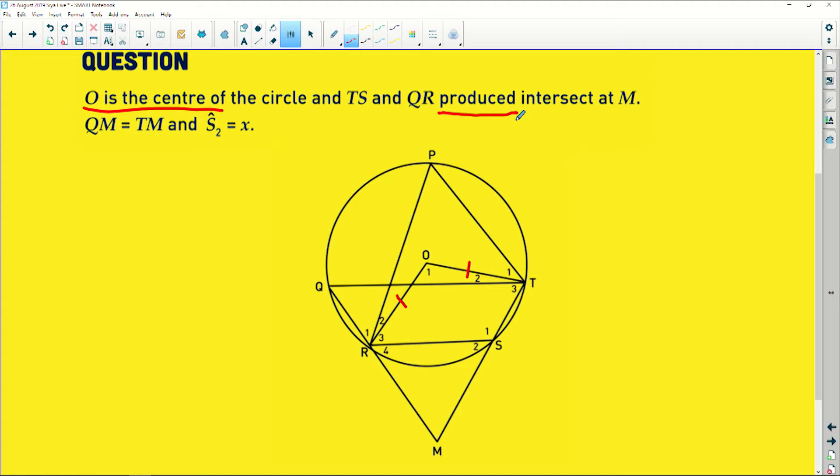Now, also, the important thing there is produced. If I see produced, it means I can talk about an exterior angle of a quadrilateral or a triangle. You cannot talk about an exterior angle unless you have one of the sides of that shape produced. Produced would mean extended. Now, that's what I have. And then QM is equal to TM. So, that's also important. I have this whole side here being equal to this whole side there. Then S2 is equal to X. So this is X.